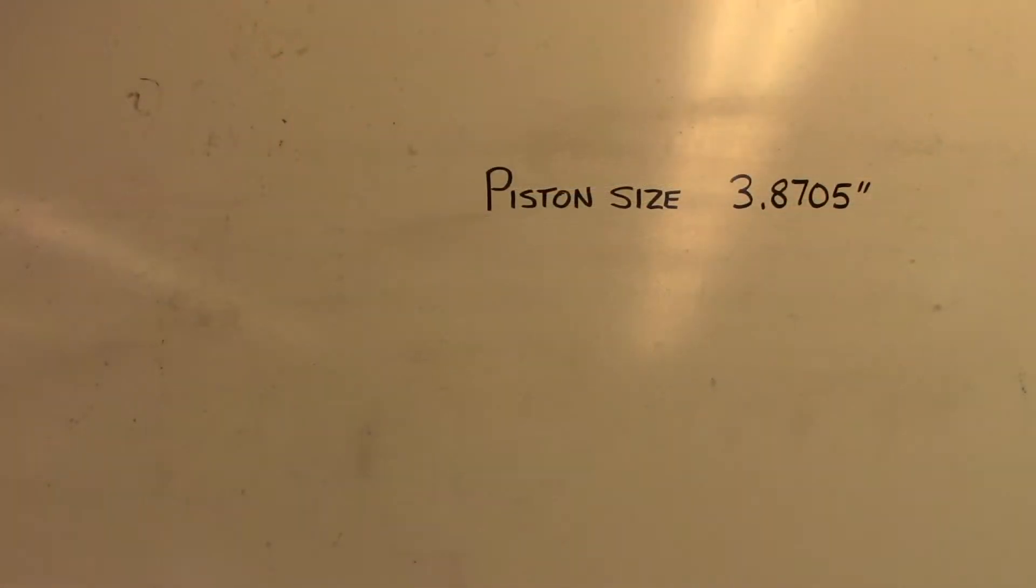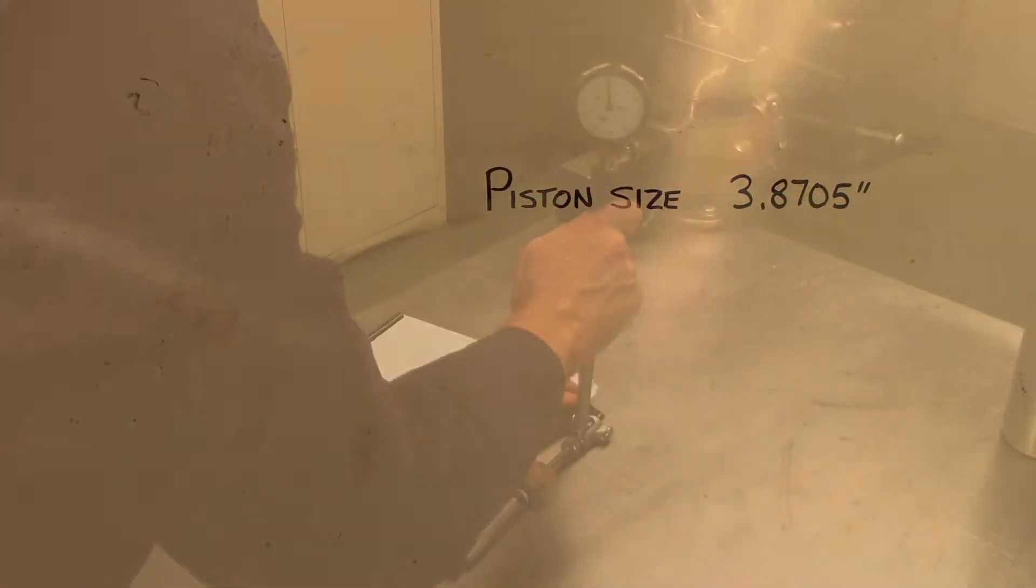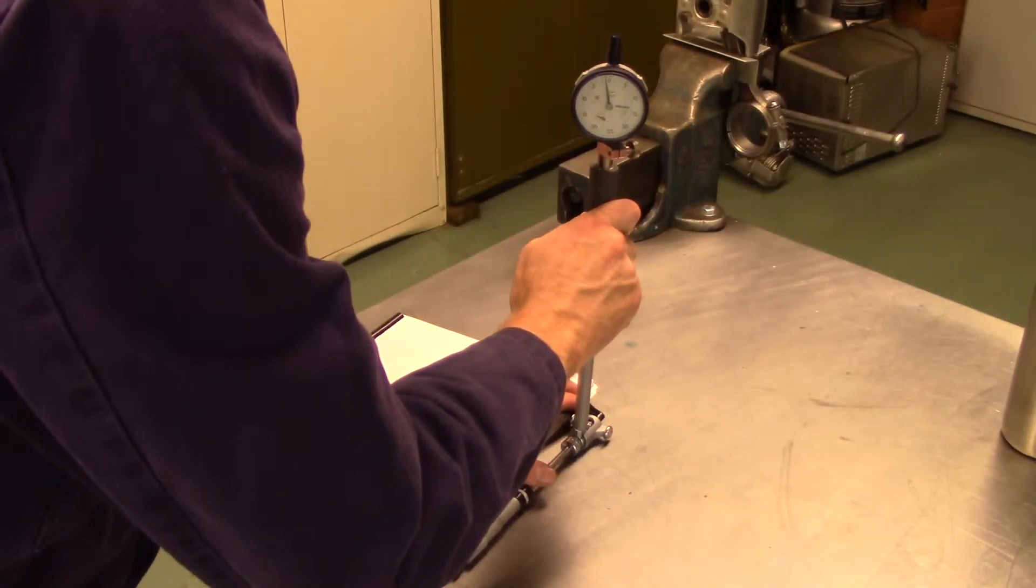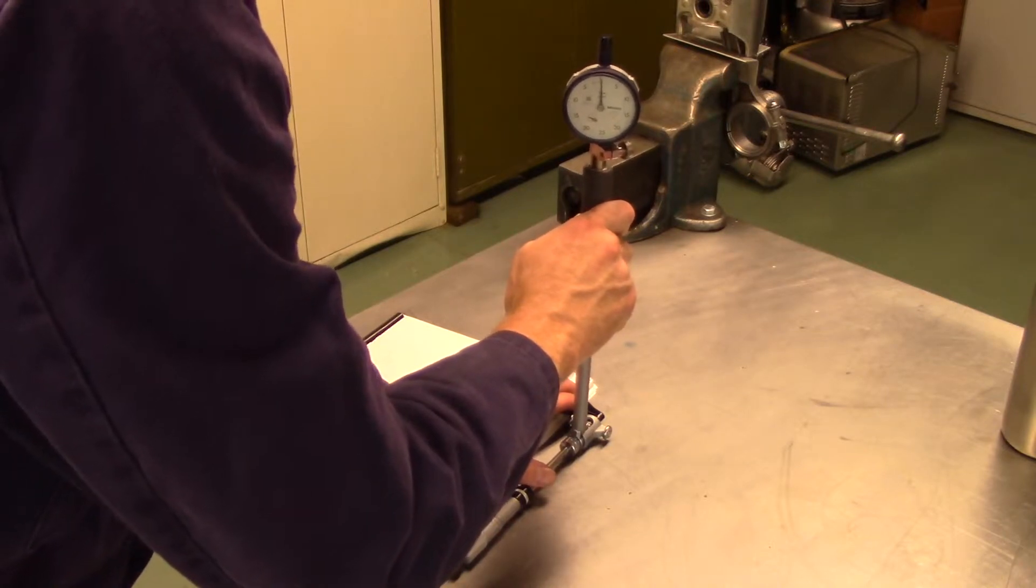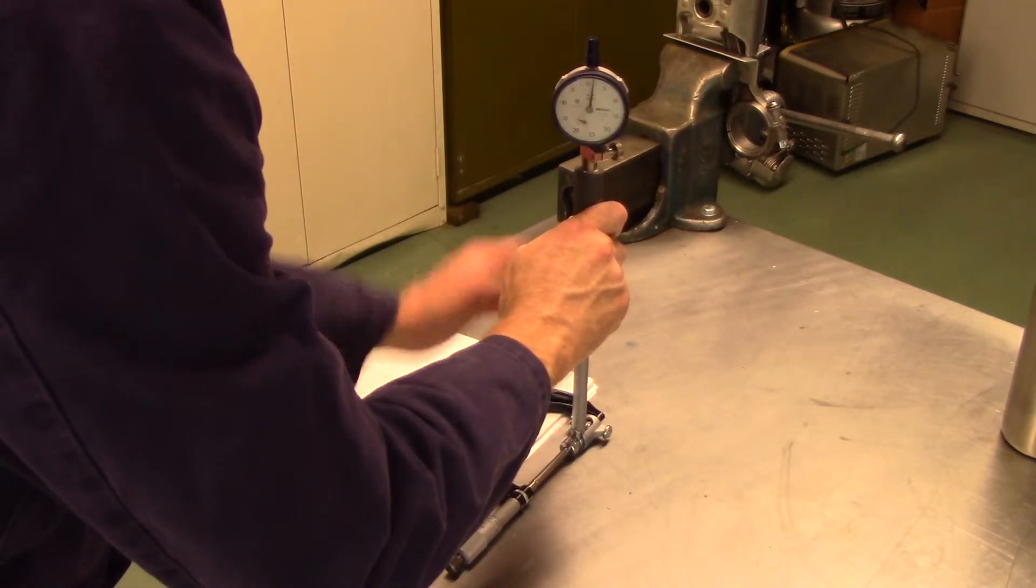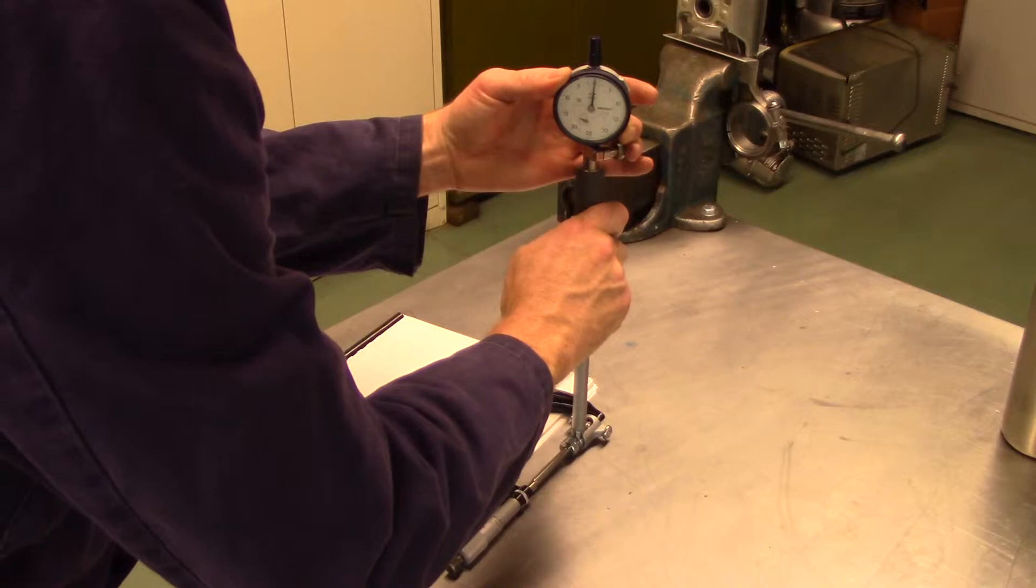Our result is 3.8705 inches. With the micrometer locked at the exact size of the piston, 3.8705 inches, we will now zero the bore gauge to that size.